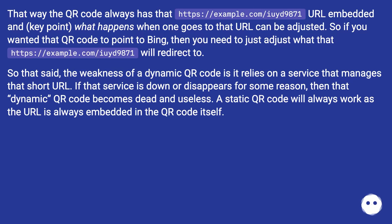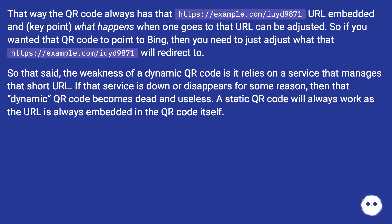So if you wanted that QR code to point to Bing, you just adjust what https://example.com/u9871 will redirect to. That said, the weakness of a dynamic QR code is it relies on a service that manages that short URL. If that service is down or disappears for some reason, then that dynamic QR code becomes dead and useless. A static QR code will always work as the URL is always embedded in the QR code itself.